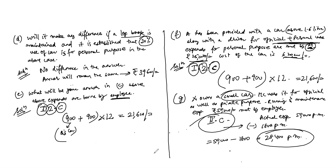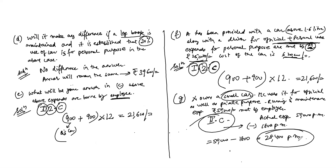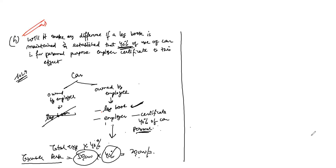Comparing Part D and Part H: in Part D (employer-owned car), 30% personal use made no difference. But in Part H (employee-owned car with employer certificate), the log book does matter — taxable perquisite is directly 40% of total expenditure = ₹20,000. The earlier answer of ₹28,400 per month should also be multiplied by 12 for the full year.